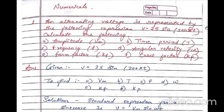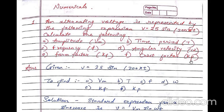Moving towards our numericals. First, an alternating voltage is represented by the following expression: V is equal to 25 sin(200πt). Calculate the following: amplitude Vm, time period T, frequency f, angular velocity omega, form factor Kf, and crest factor i.e. peak factor Kp.